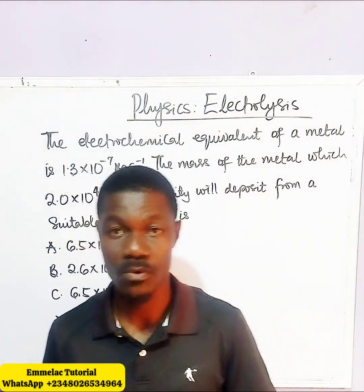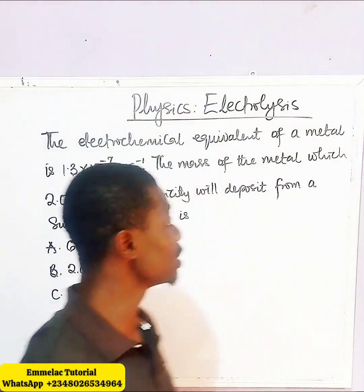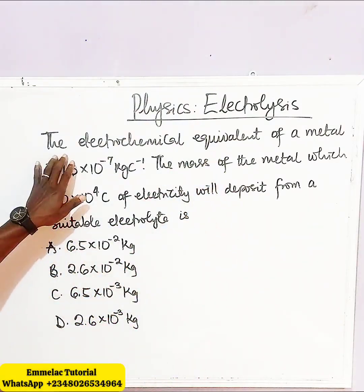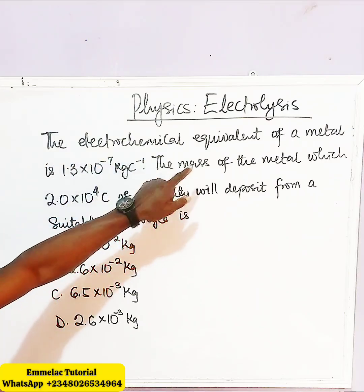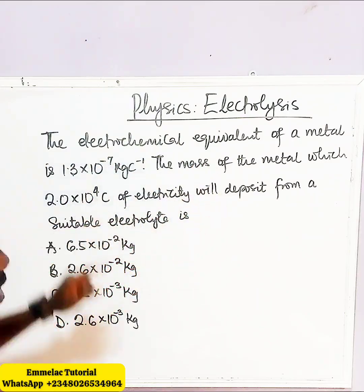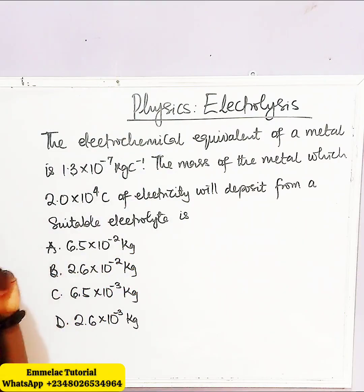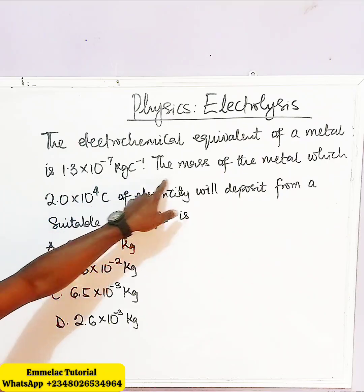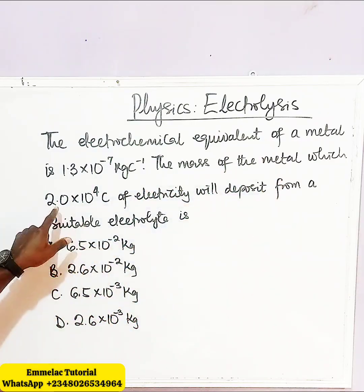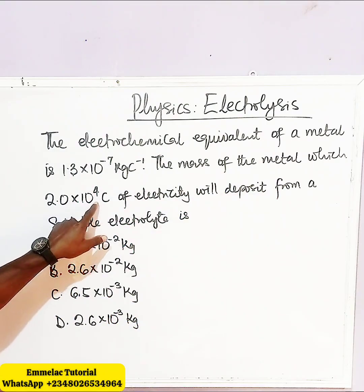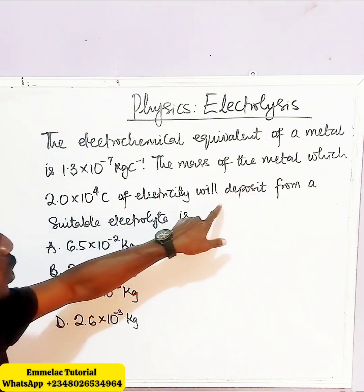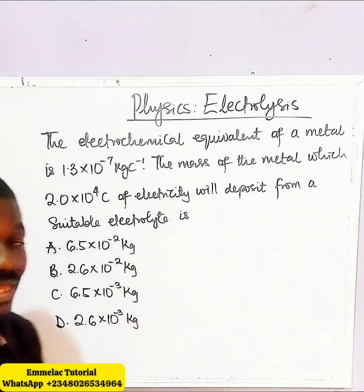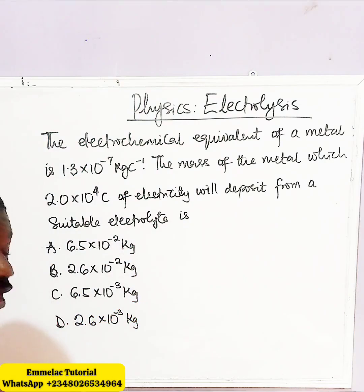Welcome to the Mila Conline tutorial. We have an electrolysis question in physics. It reads that the electrochemical equivalent of a metal is 1.3 times 10 to the power minus 7 kg per coulomb. Find the mass of the metal which 2.0 times 10 to the power of 4 coulombs of electricity will deposit from a suitable electrolyte. Here are the options.